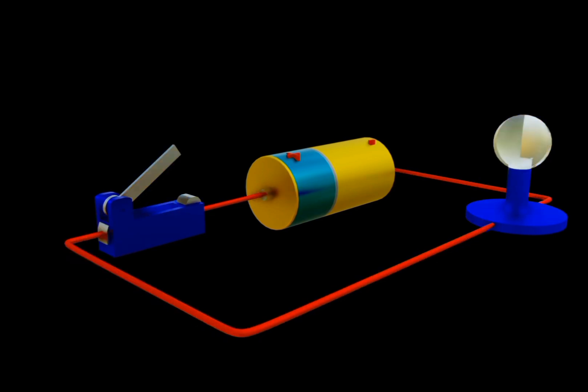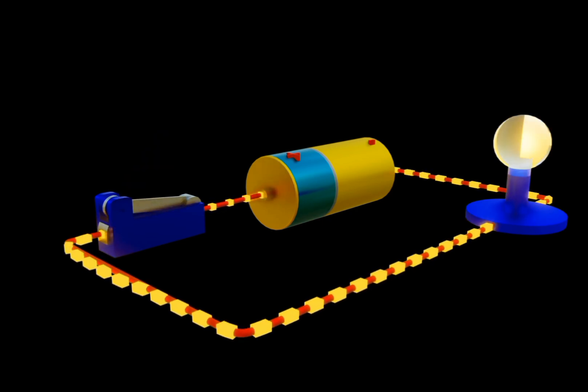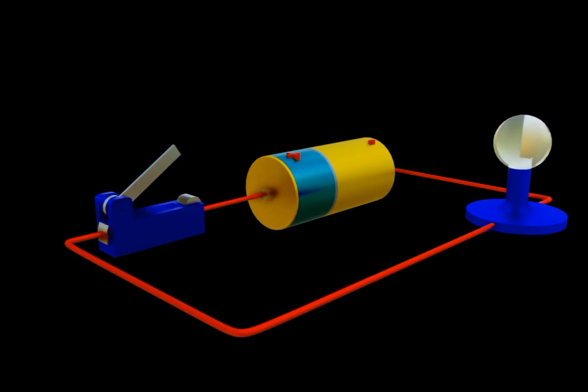When the switch is open, the circuit becomes open circuit, and when you close the switch, it completes the circuit, making it a closed circuit, completing the circuit, hence current flows.